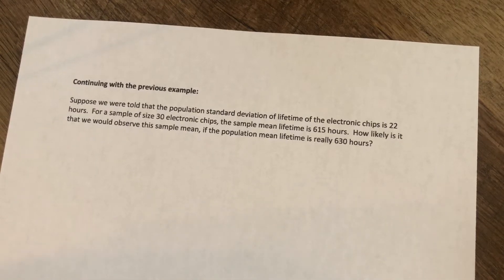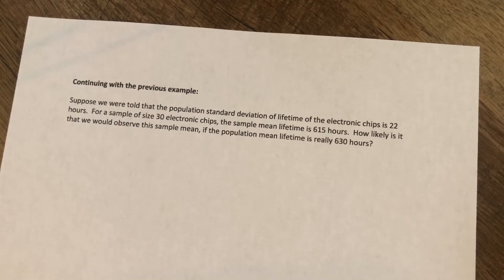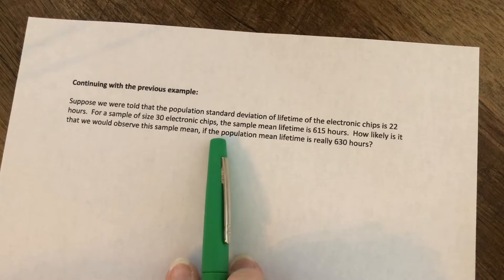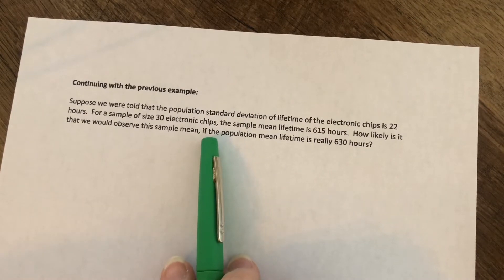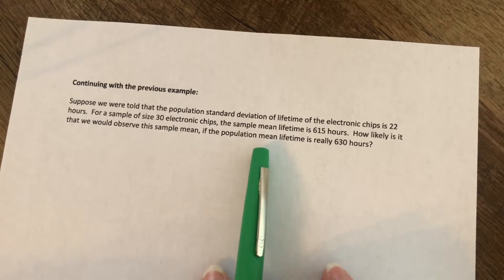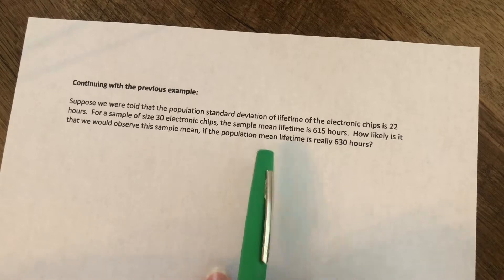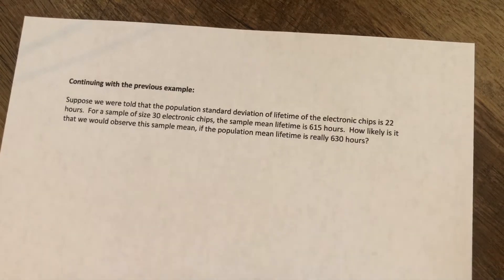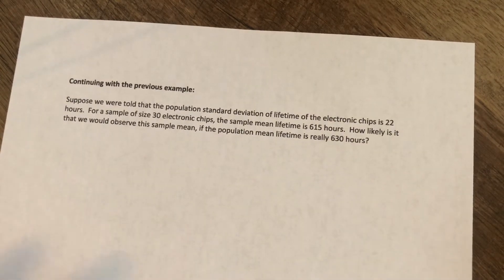So we just left off with an example where we were looking at the different types of alternative hypotheses in a hypothesis test. The example we left off with was a left-tailed alternative where we were looking at electronic chips and we were trying to determine whether or not the chips were lasting a minimum of 630 hours, which had been claimed by the manufacturer.